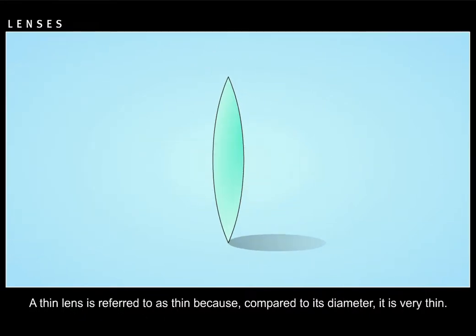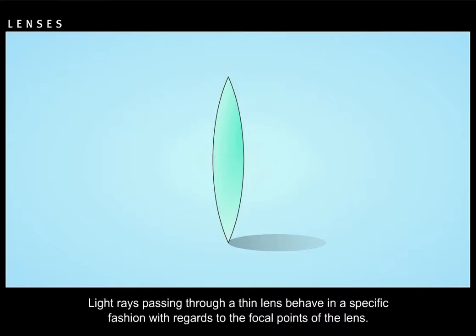A thin lens is referred to as thin because compared to its diameter it is very thin. Light rays passing through a thin lens behave in a specific fashion with regards to the focal points of the lens.